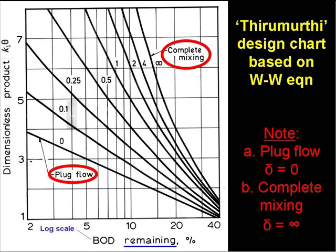This slide shows the Thirumurthi chart for dispersed flow reactors. On the y-axis, we have the dimensionless product K1 theta, and on the x-axis, on a log scale, the percentage BOD remaining. For plug flow, that is, for delta equals zero, we have a straight line, and for all other values of delta, we have slightly curved lines. Several lines are on the chart, and the corresponding dispersion number is adjacent to each.